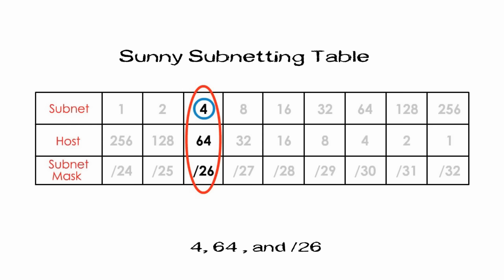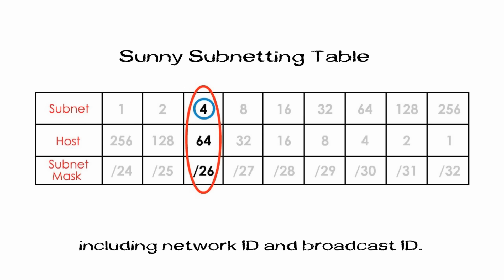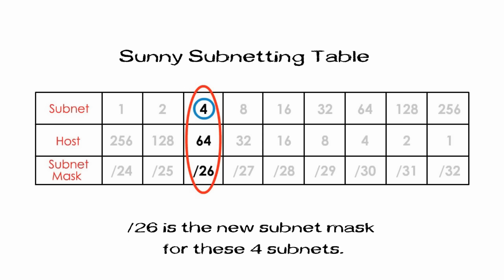Let me circle the whole column, ignoring all other columns, because we only use these three numbers: 4, 64, and /26. Four means four subnets. 64 means each new subnet will have 64 total host IDs, including network ID and broadcast ID. /26 is the new subnet mask for all four subnets.